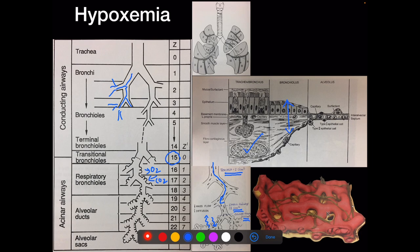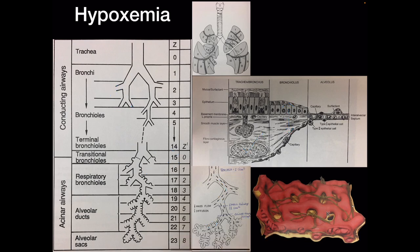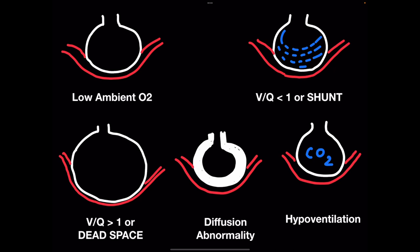Carbon dioxide diffuses much more easily than oxygen. At the alveolar level, every alveolus is surrounded by a sheet of capillaries — like a 400-thread-count Egyptian cotton sheet covering the alveolus. If you imagine a single alveolus surrounded by a single capillary, you can understand the five different ways hypoxemia can occur.